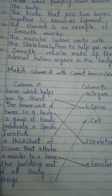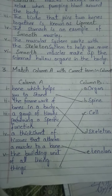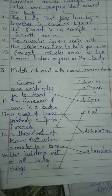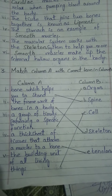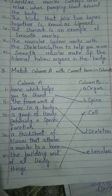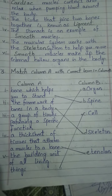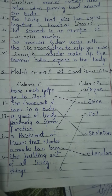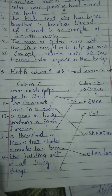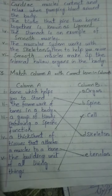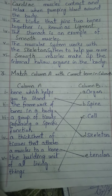Next question: match the column. Which helps you to stand in the body — skeleton. A group of tissues performing a specific function in the body — organ. A thick sheet of tissue that attaches a muscle to a bone — tendon. The building unit of all living things is called a cell.